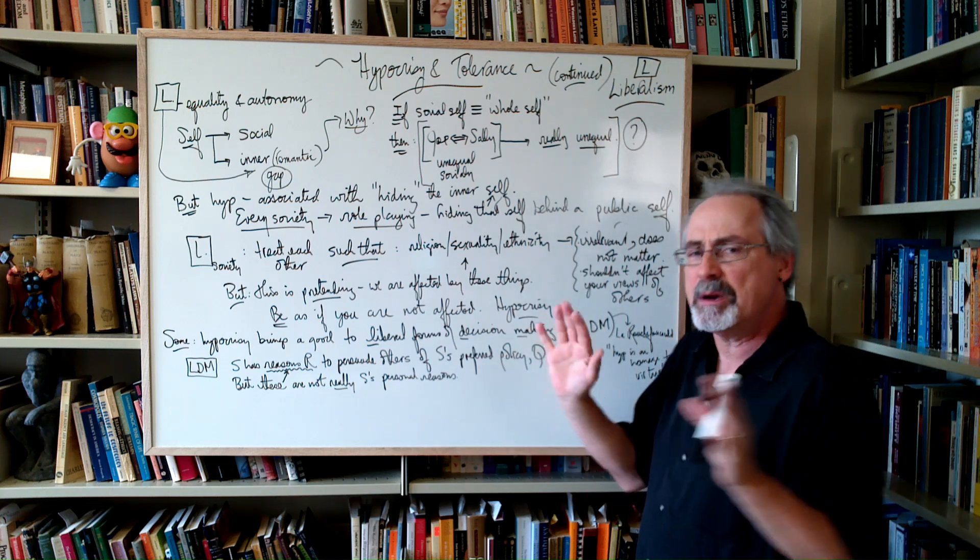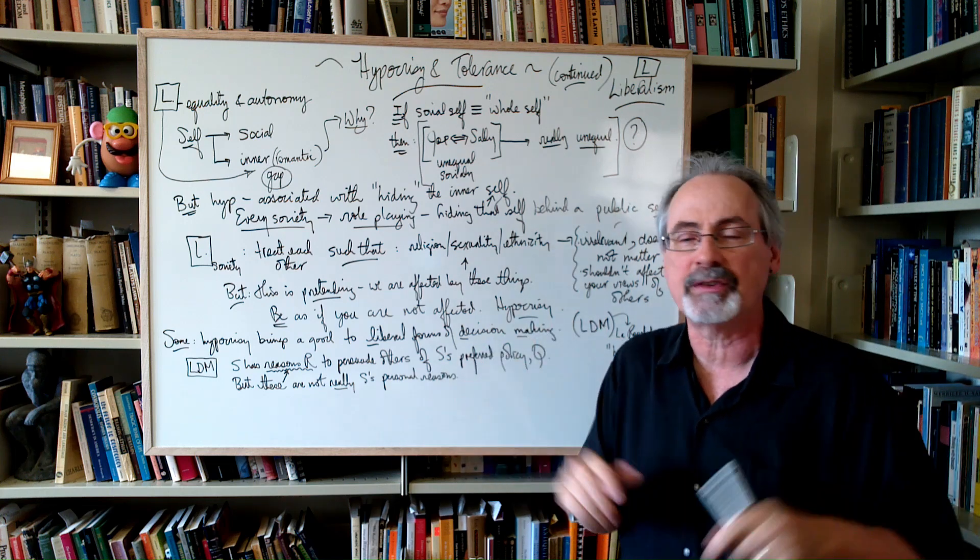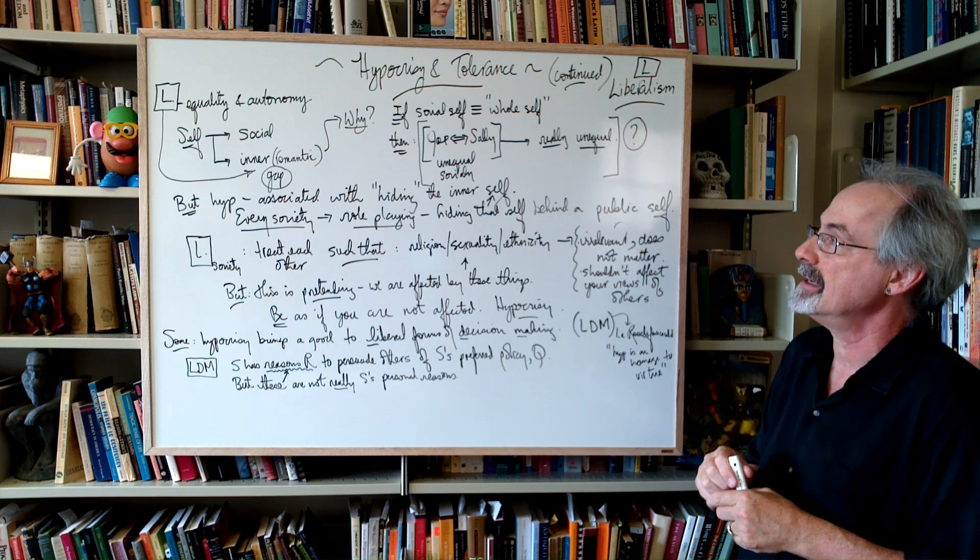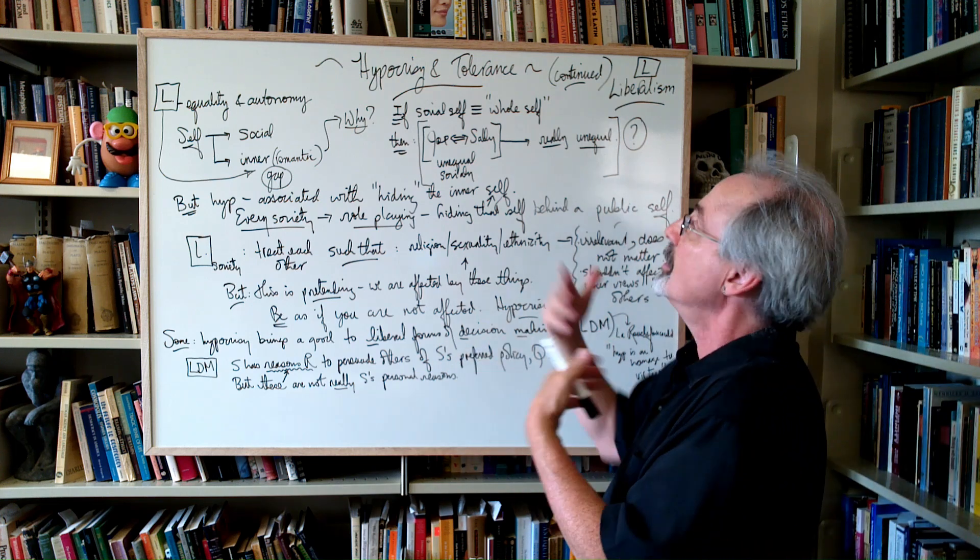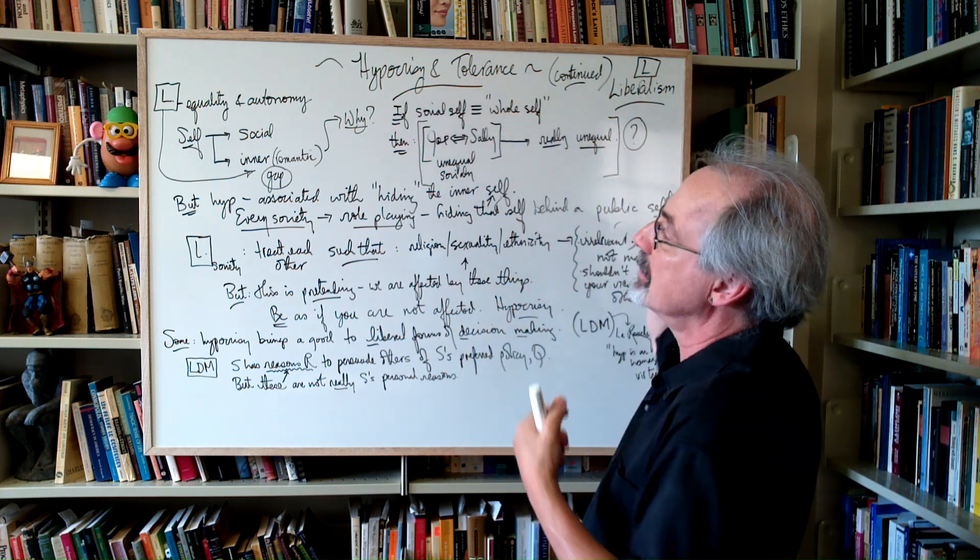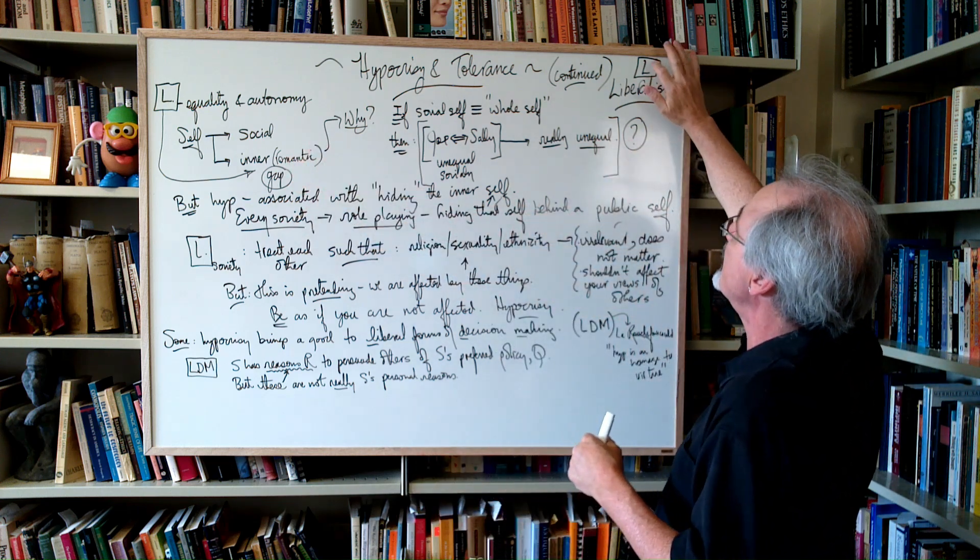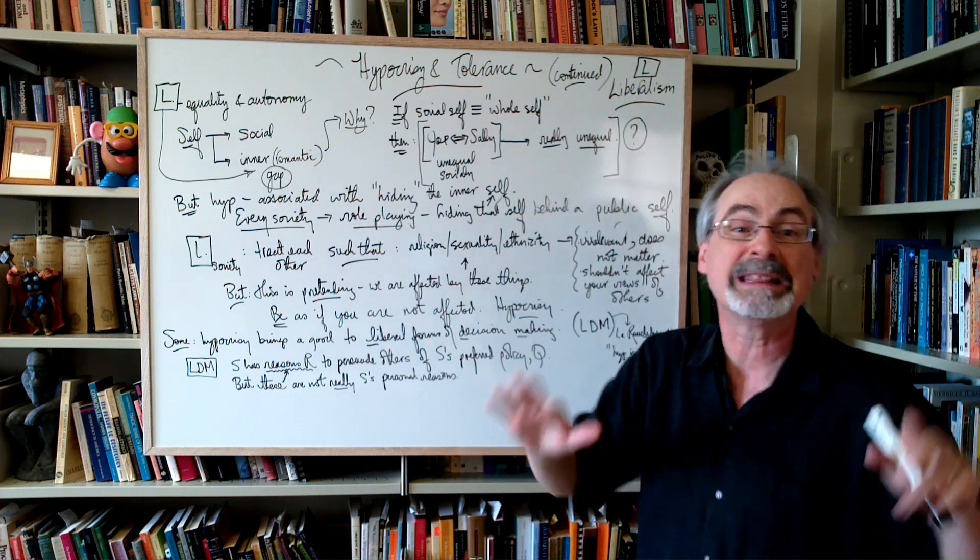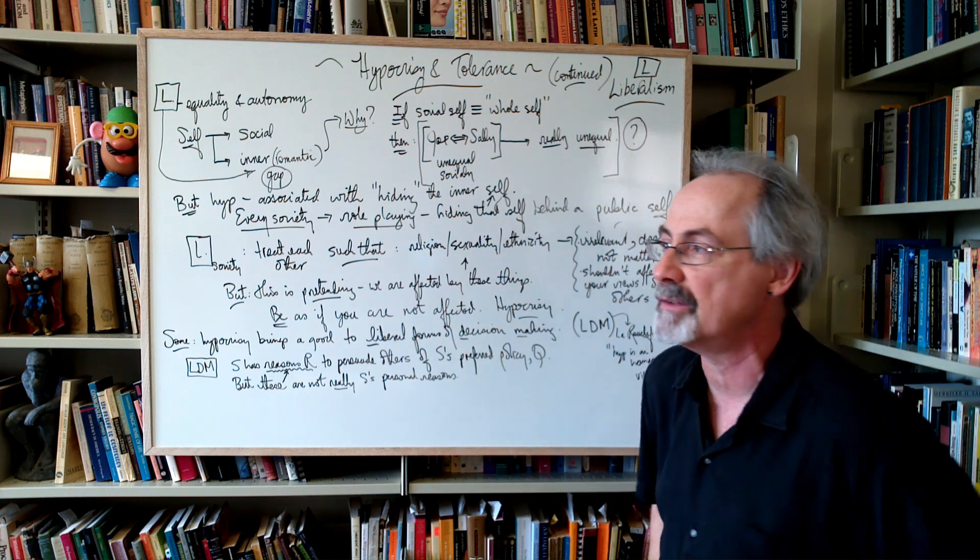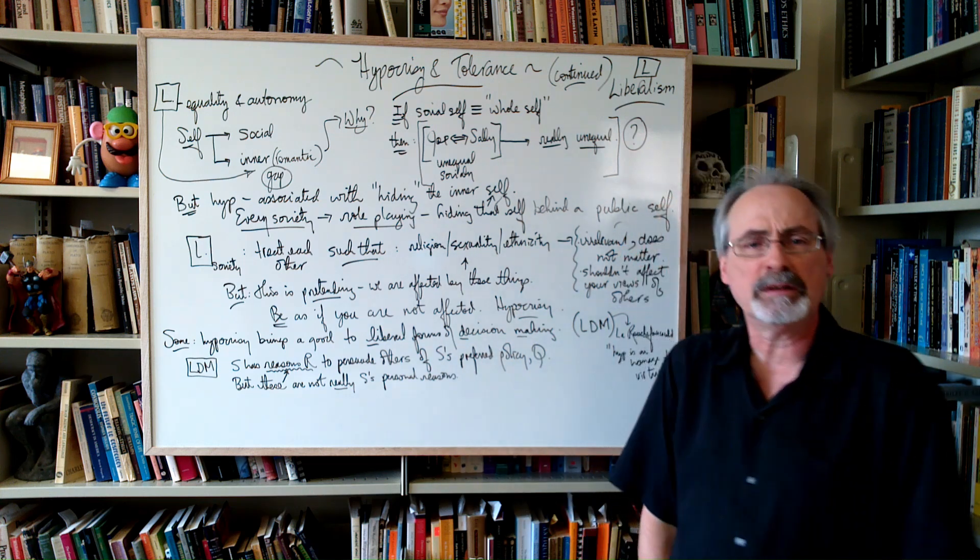But I'm not going to go into all the details. I just want to point out a few kinds of connections and some interesting ideas that link hypocrisy, tolerance, and liberalism. So liberalism, I'm just going to put with an L here, not to be confused with liberal parties that you find in various democracies around the world, but just liberalism.